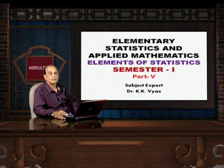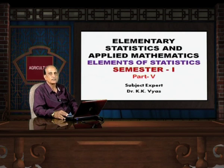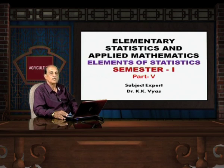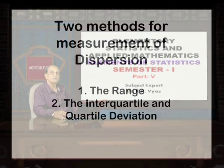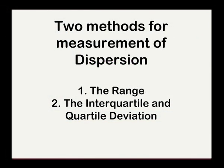Now, in this part of the program, I would like to discuss first of all a problem which is based on determination of mode in respect of continuous series. After that, I would like to discuss what is geometric and harmonic mean. After that, I would like to discuss the measures of dispersion, in which I would like to discuss the limitations of central tendencies, and two methods for measurement of dispersion — first is the range and second is the interquartile deviations.